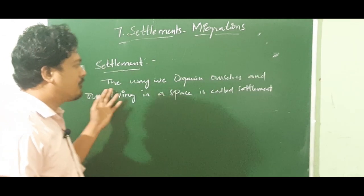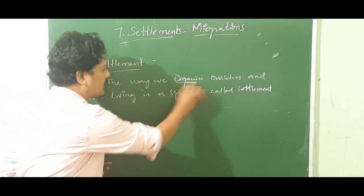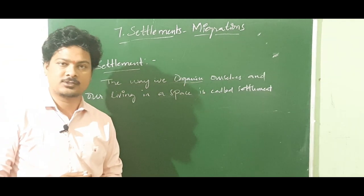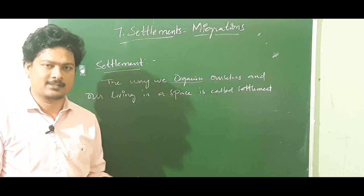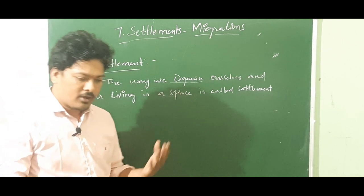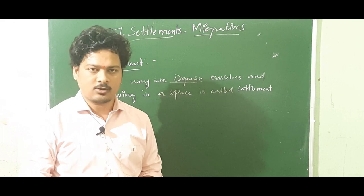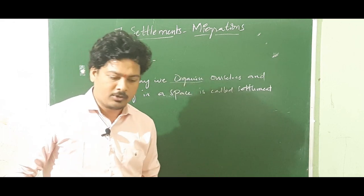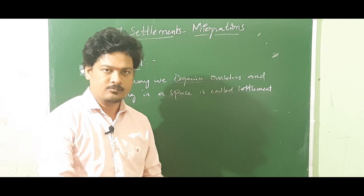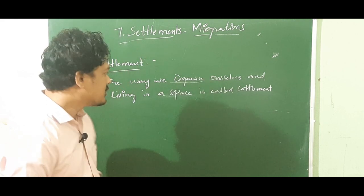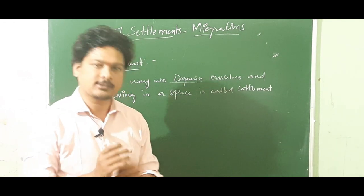So what is settlement? The way we organize ourselves and our living in a space is called settlement. For example, by constructing roads so you can ride vehicles like motorbikes, cars, and trucks. We also electrify poles so we can have electricity in our homes. And there is a proper drainage system — what you call 'Kalualu Morilu' — where all the trash can go. In this way we are organizing ourselves and living in that space, and that is called settlement.